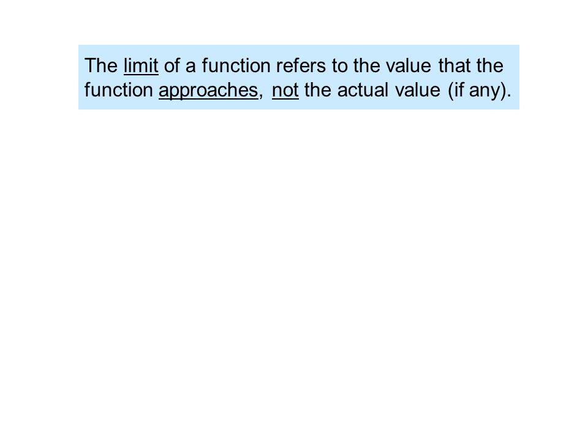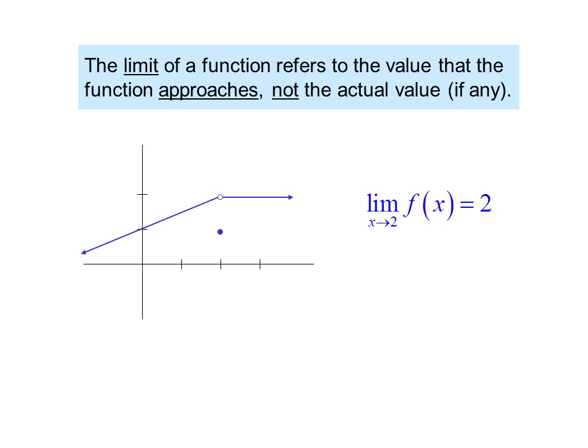The limit of a function refers to the value that the function approaches, not the actual value, if any. In this graph, the limit as x approaches two of f of x equals two, because coming from either side — from the left or the right — the y value is approaching two, not one. It does not matter that the limit is two but the value of the function is one. As long as we're looking for the limit, we don't care what the value of the function is.